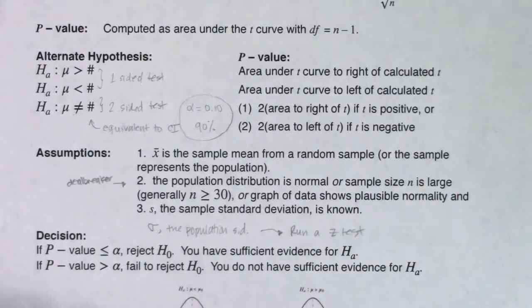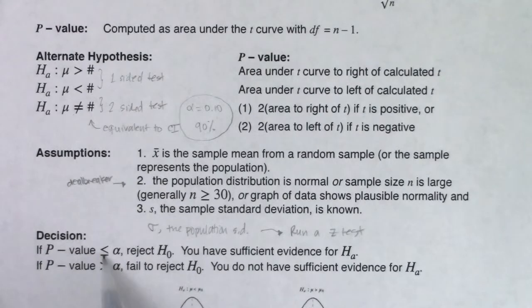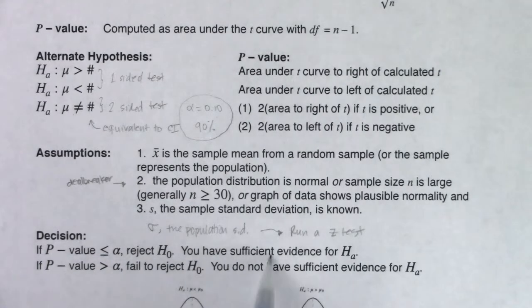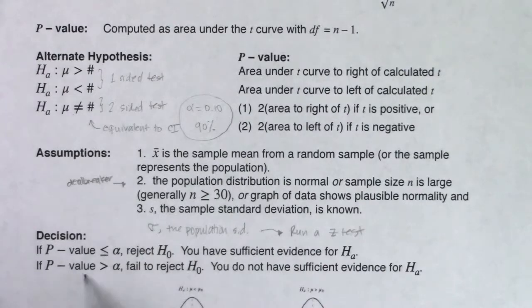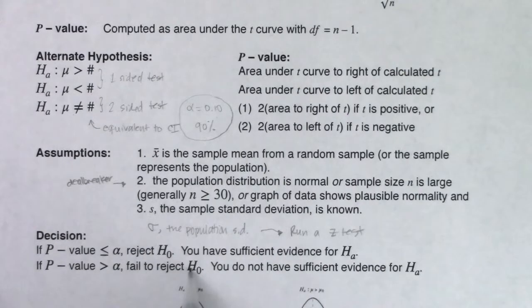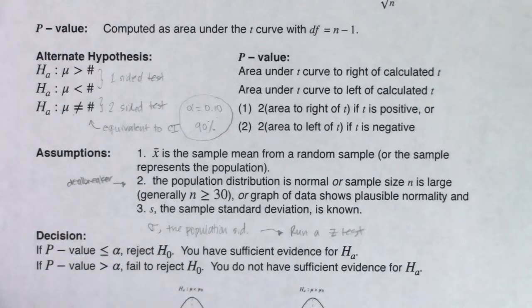Here's how you make your decision: same as last time. If your p-value is less than alpha, reject the null, and you have sufficient evidence for the alternate. If your p-value is greater than alpha, you're going to fail to reject the null, and you do not have sufficient evidence for the alternate.